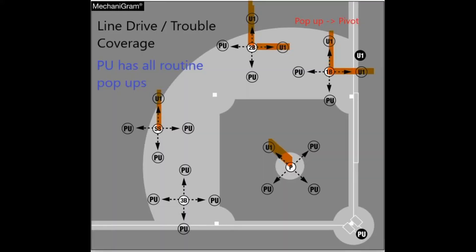Let's begin by talking about catch-no-catch responsibility with no runners on base. With no runners on base, the plate umpire is responsible for all routine pop-ups on the infield, except those by the pitcher going backwards.